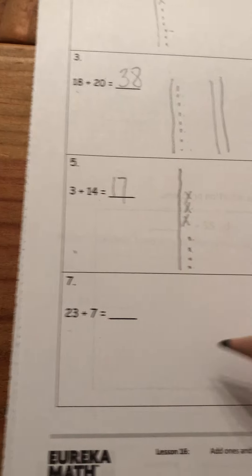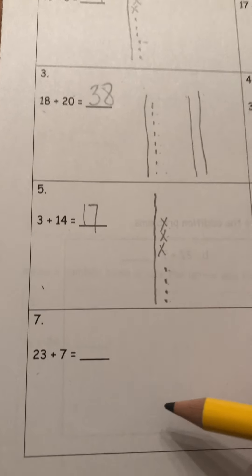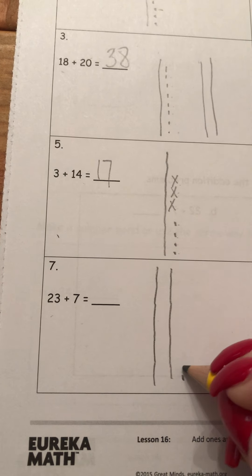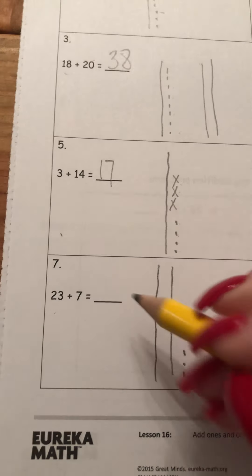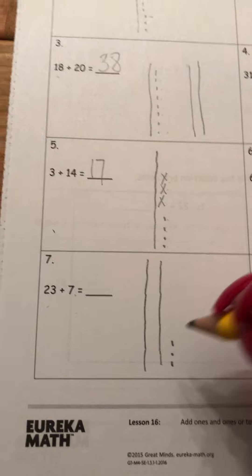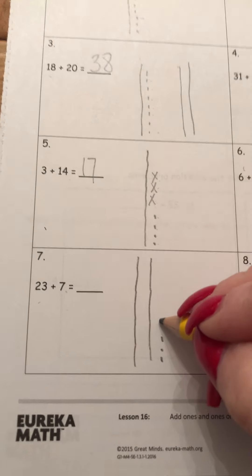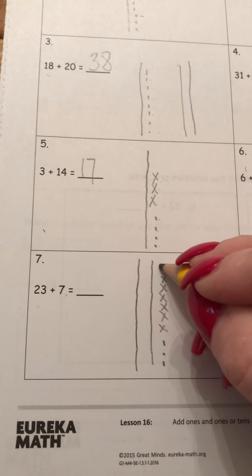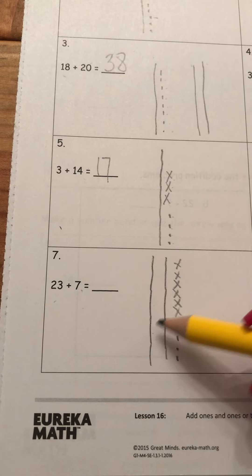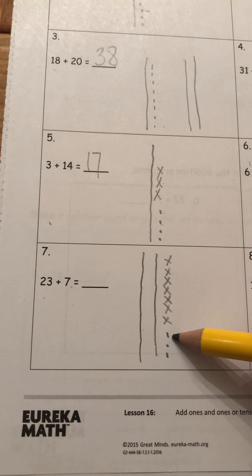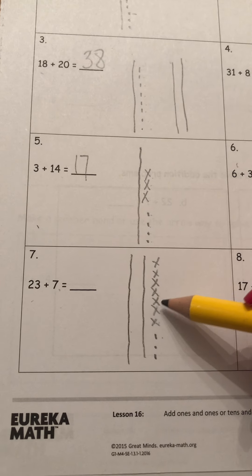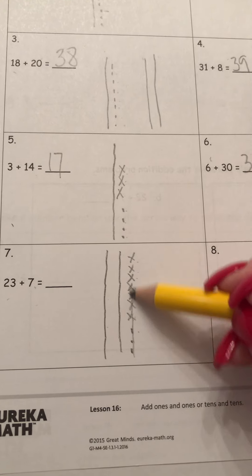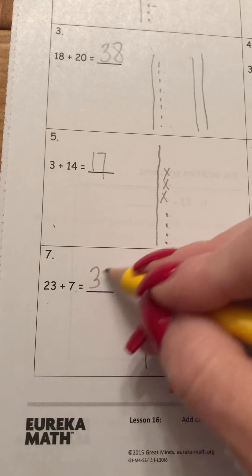23 plus 7. I like to draw my quick tens for my larger numbers first. So here is 10, 20, 21, 22, 23. And now I need 7 little X's. I'm going to count on. Well, I'll just do X's. 1, 2, 3, 4, 5, 6, 7. So let's count on. 10, 20, 23, 24, 25, 26, 27, 28, 29, 30. Oh, that makes a quick 10. And my answer is 30.